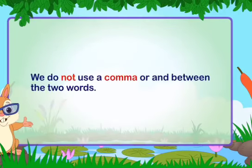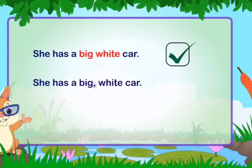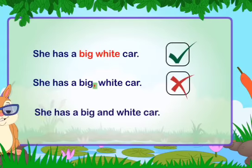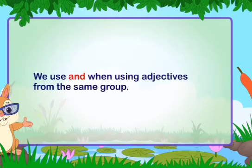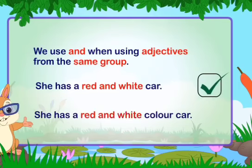We do not use a comma or 'and' between size and color adjectives — 'she has a big, white car' is incorrect, and 'she has a big and white car' is also incorrect. However, we use 'and' when using adjectives from the same group — for example, 'she has a red and white car' is correct, while 'she has a red and white color car' is incorrect.